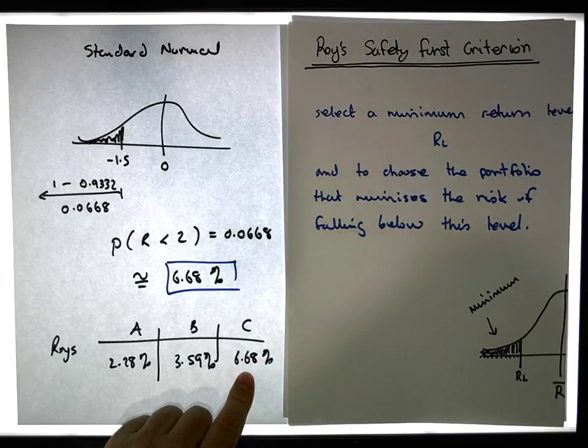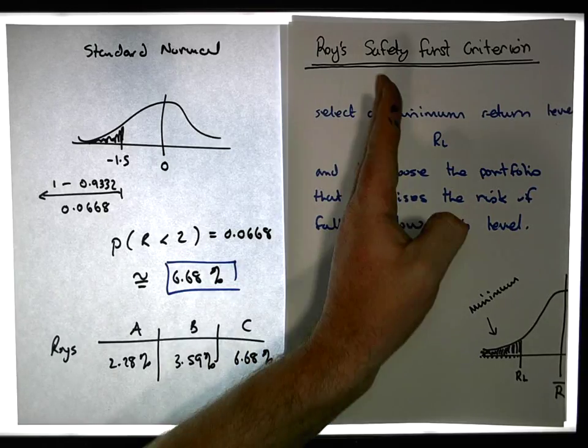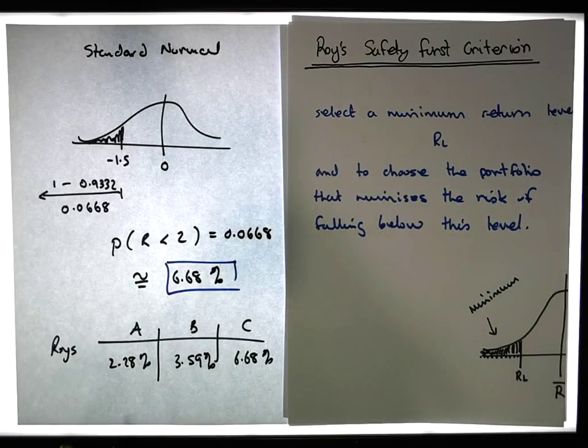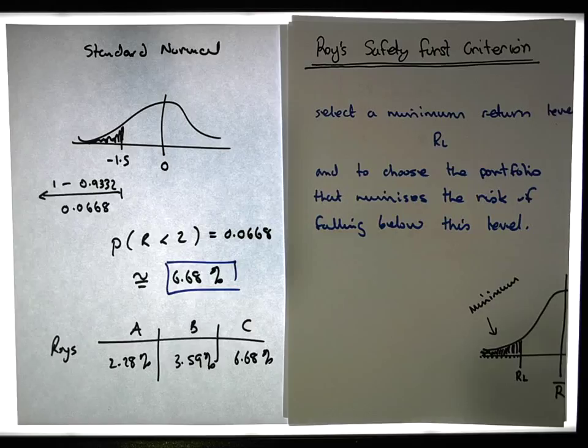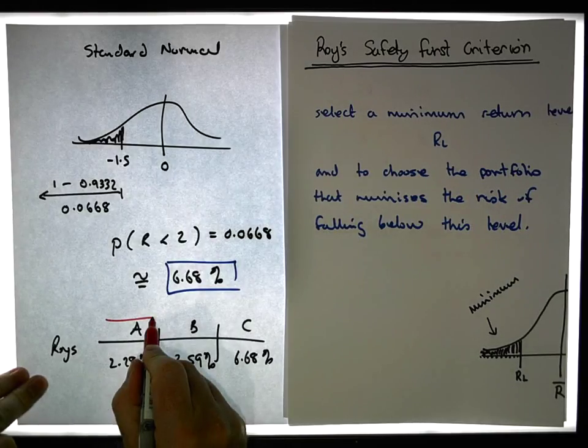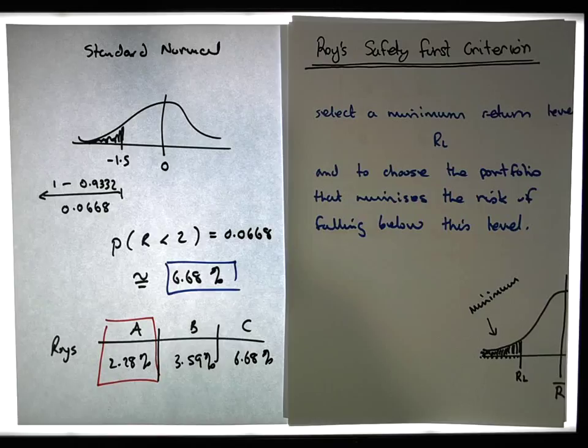So based on Roy's criterion, we choose the portfolio that reduces our risk, and in this case I think we can all agree, it's actually going to be portfolio A. That's the one we're going to choose.